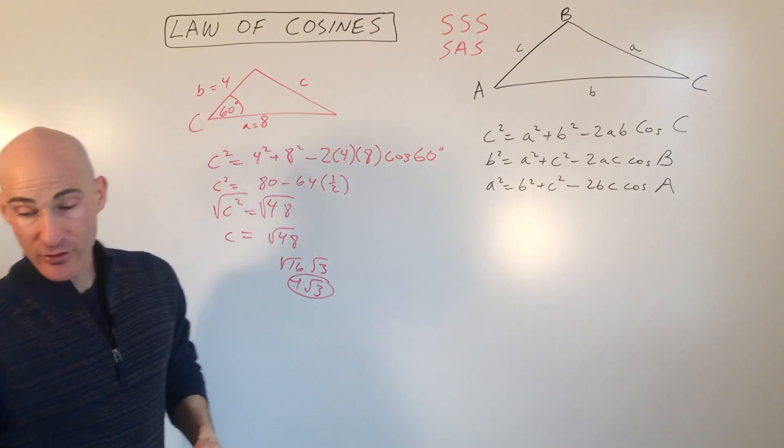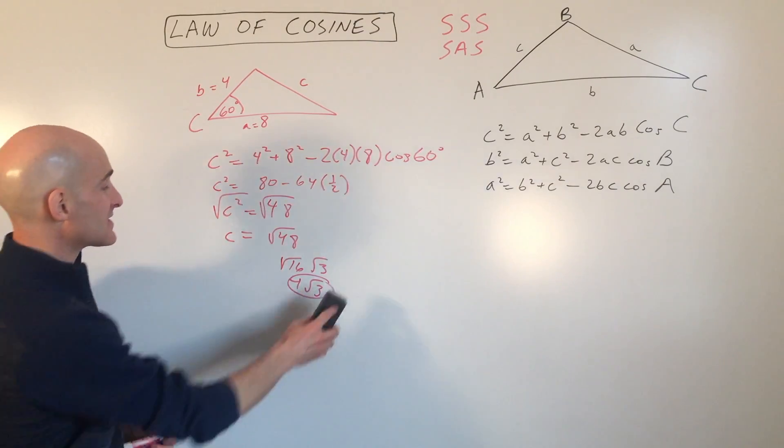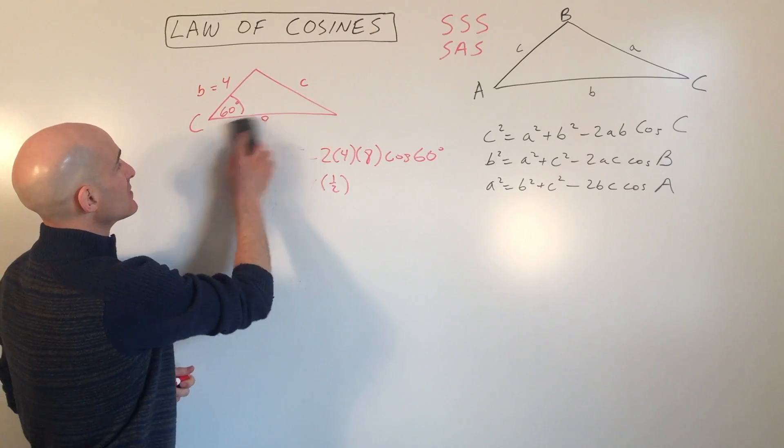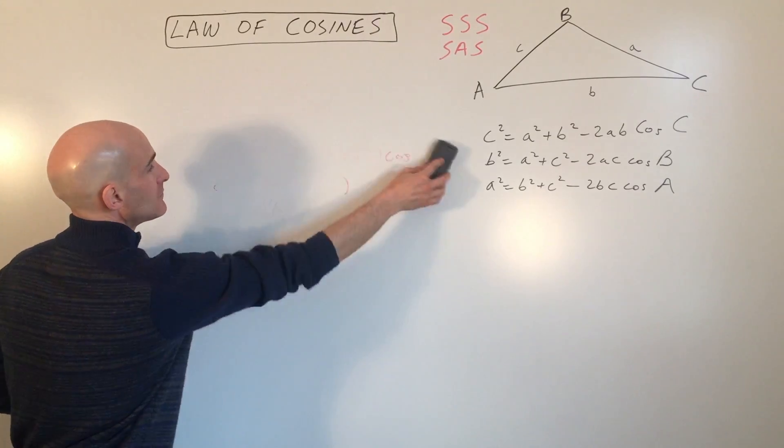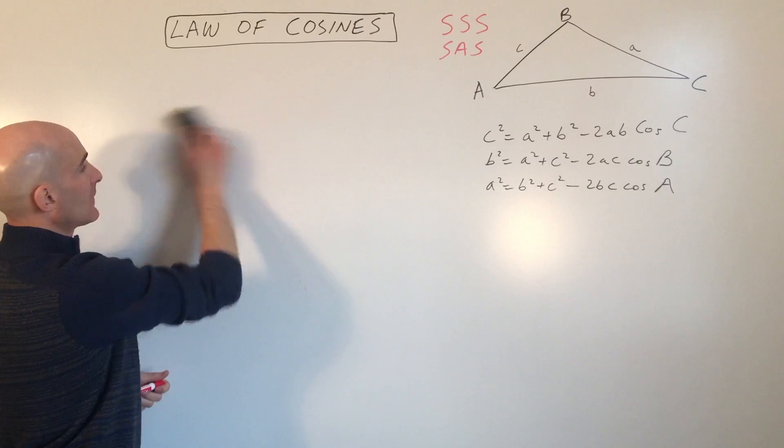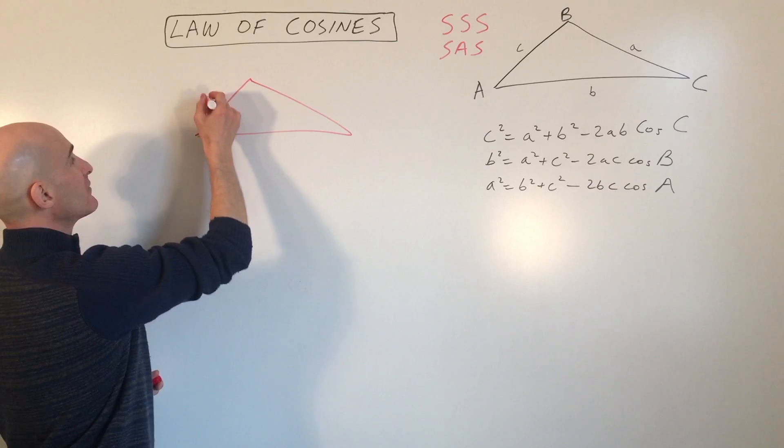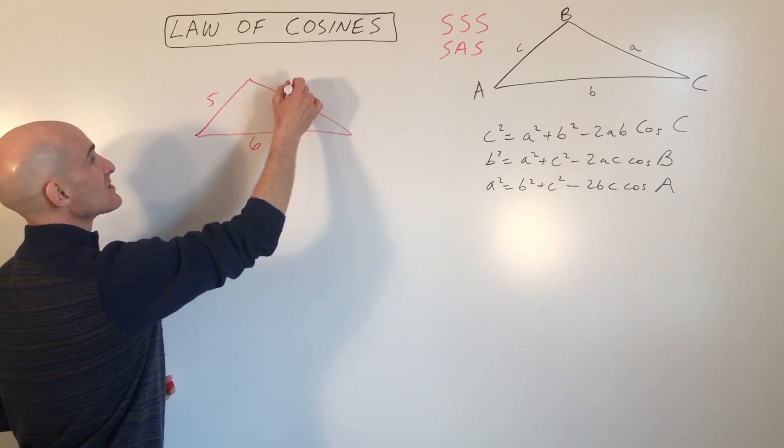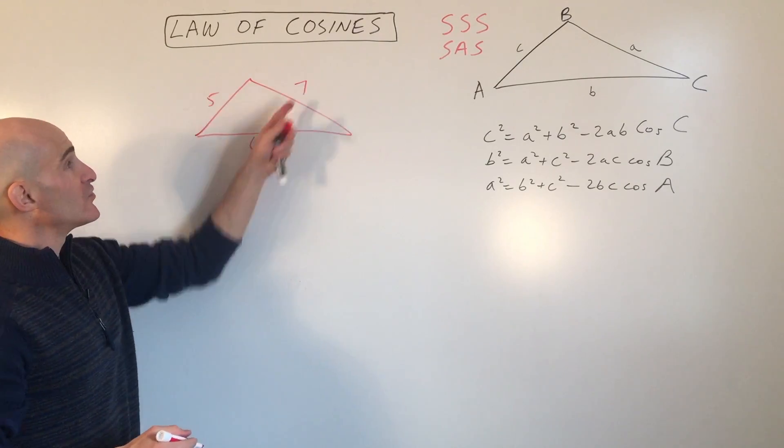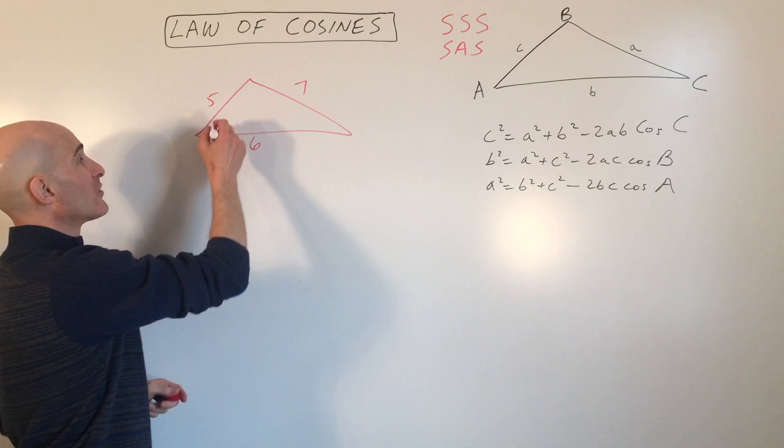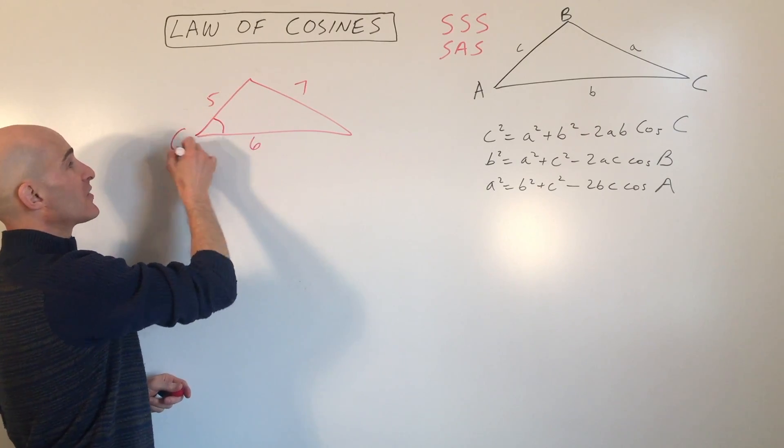Let's do an example where they give you three sides. Side, side, side. So an example in this case would be something like this. Say you're given 5, 6, and 7. They're giving you just three sides and you want to solve for, let's say, this angle right here. We'll call it angle C again.